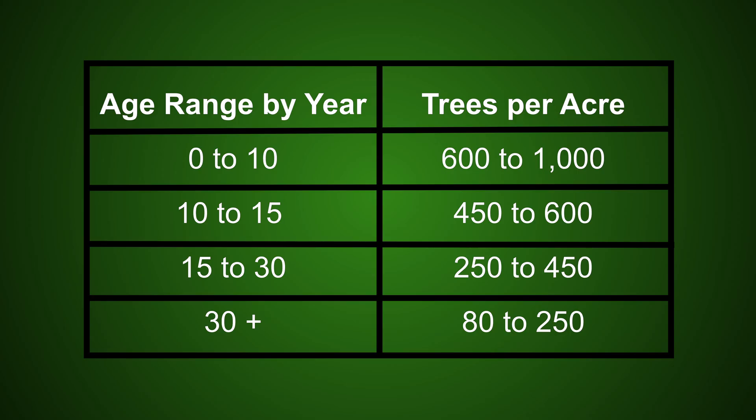Looking back at your data, compare your findings with the table on the screen. The table shows how many trees per acre you should have for the stand's current age range. For the next steps in managing your forest, contact the Maryland Forest Service for assistance.